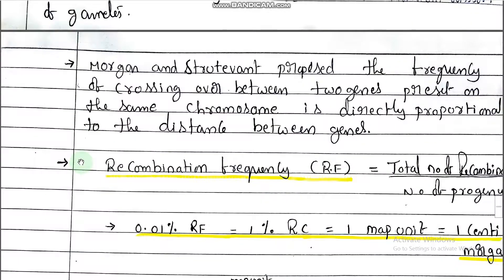Morgan and Sturtevant — Sturtevant was the student of Morgan — proposed that the frequency of crossing over between genes present on the same chromosome is directly proportional to the distance between the genes. This is a very important point to remember.